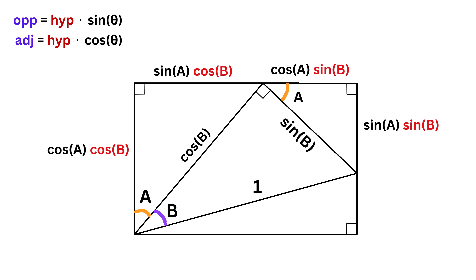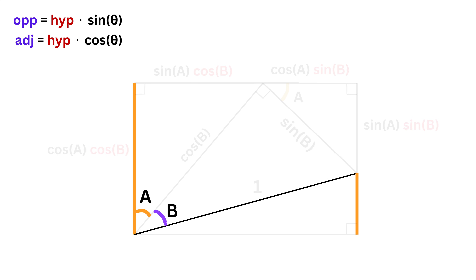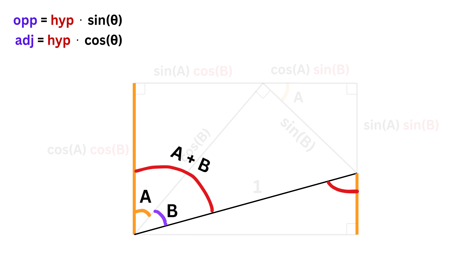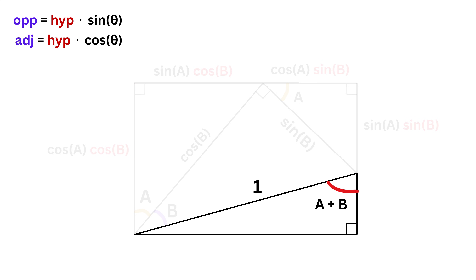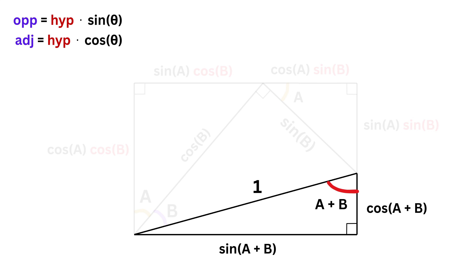Can you notice where we are heading to? Now look at these three lines. Since both these lines are sides of the same rectangle, they are parallel, and thus this angle will be equal to this angle. But this angle is equal to A plus B, and thus this angle will also be equal to A plus B. Finally, focus on this right triangle. This side is adjacent to angle A plus B, and thus its length will be equal to cosine of A plus B times hypotenuse, or one, which is cos(A+B). And this side length will be equal to sine of A plus B.